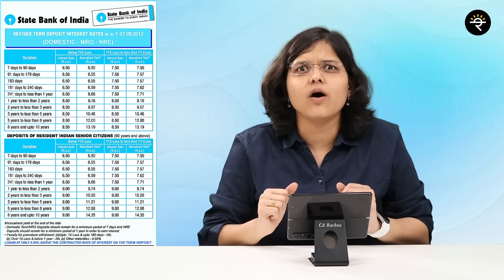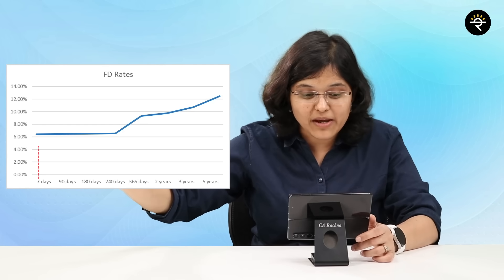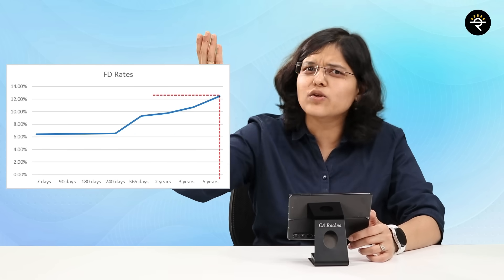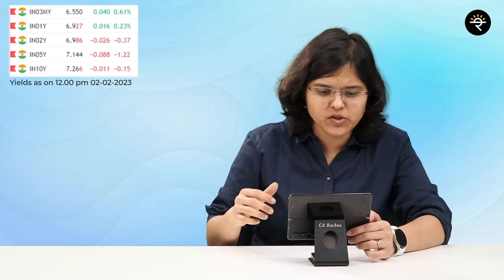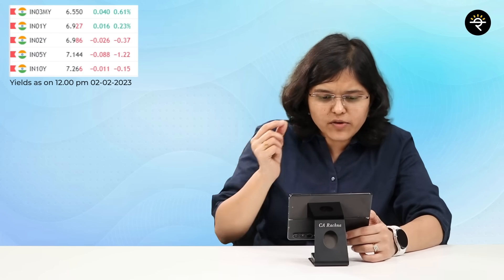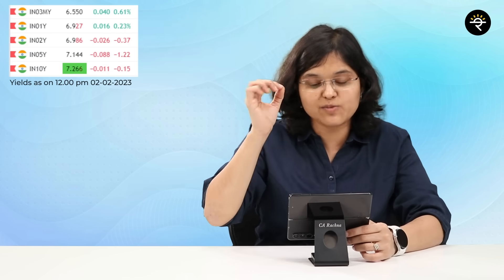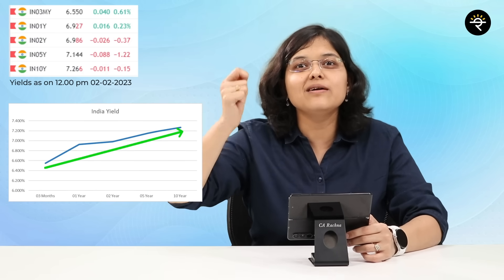If I were to plot the same chart on a graph, it would look like an upward-sloping curve — at lower time frames on the x-axis, the rate of interest on the y-axis is lower, and as the time frame increases the yield also increases. Now, generally when referring to yield we use bonds rather than FDs. I've taken the example of Indian government bonds with five different maturities: 3-month, 1-year, 2-year, 5-year, and 10-year. The 3-month yield is 6.5%, increasing up to 7.26% for the 10-year bond. Again, plotting this gives an upward-sloping chart.